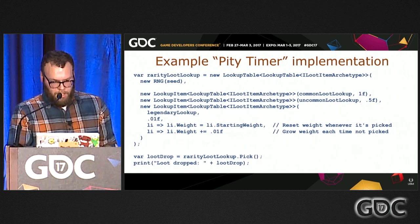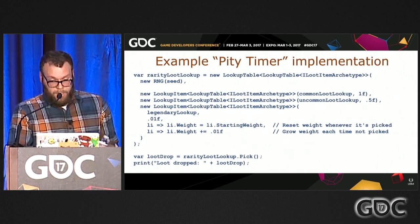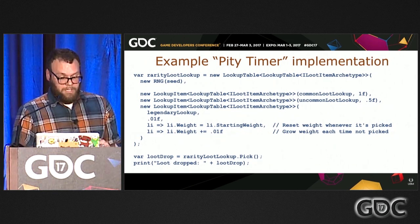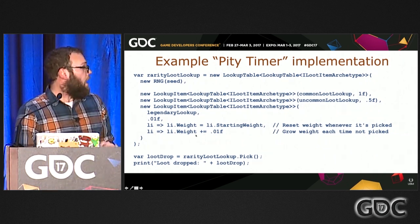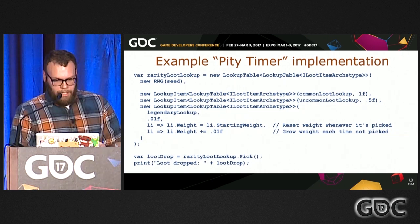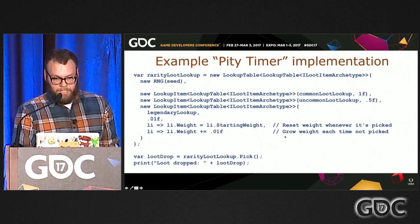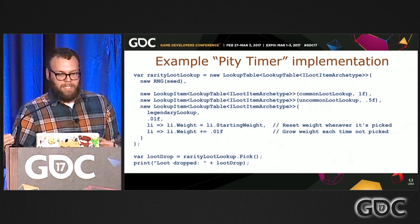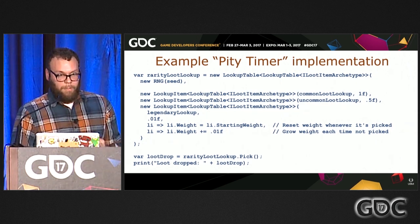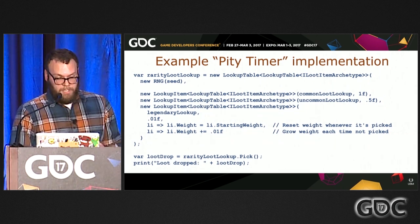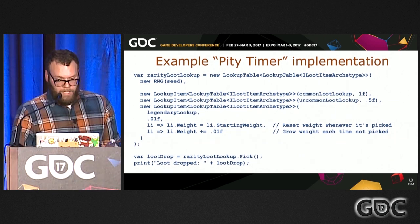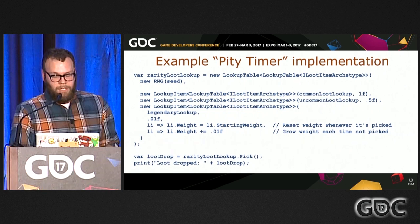The dynamic weighting is the other powerful tool of a weighted lookup table. In this case I'm changing the weight to implement the pity timer, making it so the legendary will eventually drop. I'm passing in callback functions — this second one says each time the legendary is not picked, its weight actually increases. Mathematically, you can't be 100% sure unless you're also decreasing weights for other elements. But here I'm just increasing the legendary's weight each time it's missed, and when it finally hits, I reset the weight. It's a simple, elegant, and maintainable way to implement something like this.